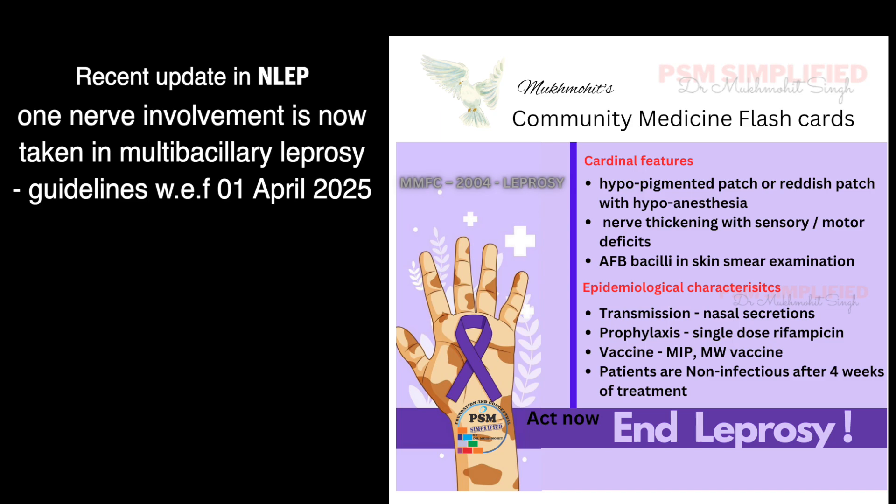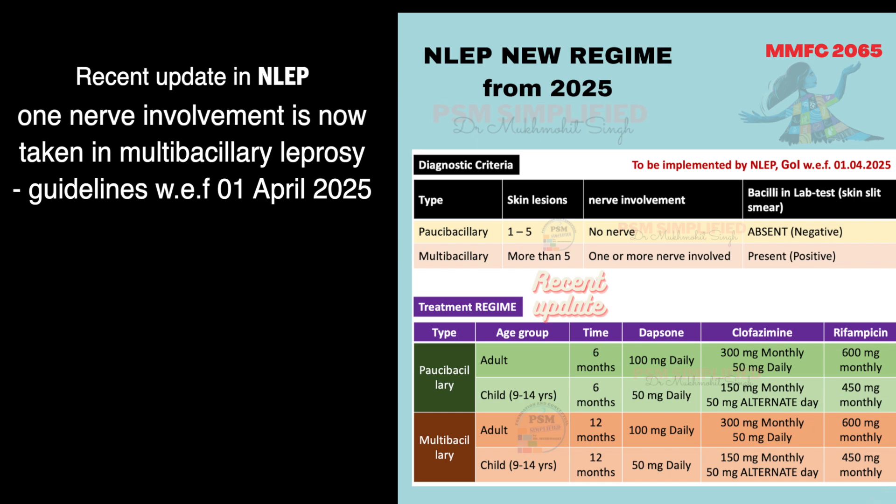Coming over to the diagnostic and treatment guidelines — as per the NLEP guidelines there is a revision. Earlier, one to five lesions was paucibacillary, and no nerve involvement or one nerve involvement was also paucibacillary. Now, as per the revision from 1st April 2025 in NLEP, please remember that one nerve, two nerves, or any number of nerves is taken as multibacillary.